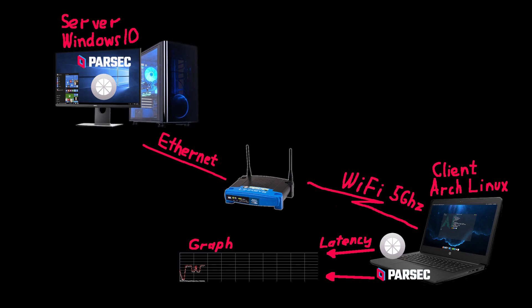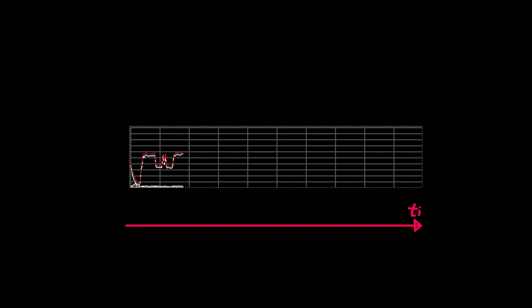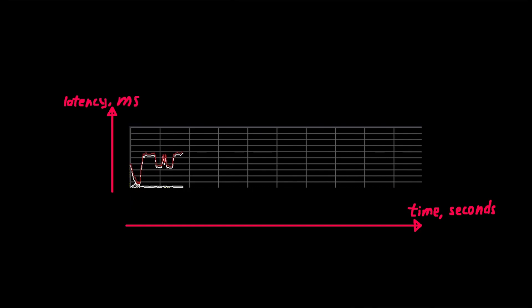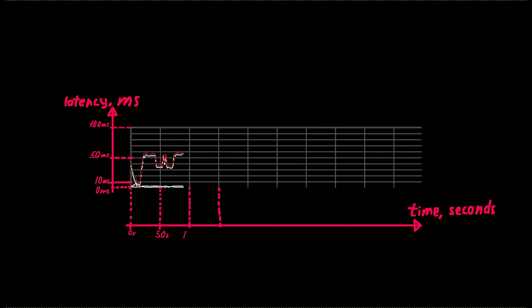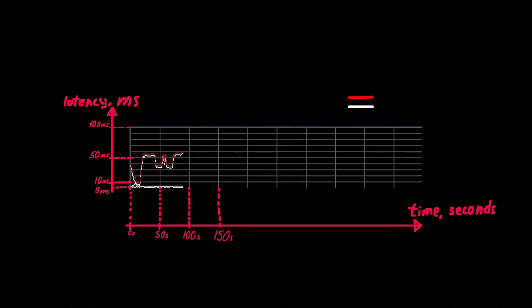Here is how to understand the graph. It shows how latency values change over time. On the x-axis we have time in seconds; on the y-axis we have latency in milliseconds. Each horizontal line is 10 milliseconds, so the bottom is 0ms and the top is 100ms. Each vertical line is 50 seconds. The red line represents total latency, and the white lines represent encode, decode, and render latencies.